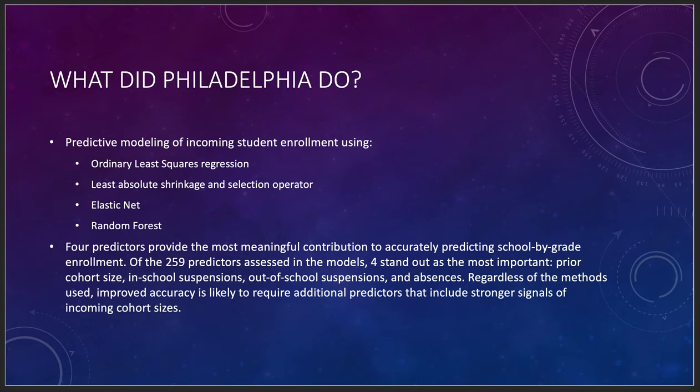Regardless of the methods used, improved accuracy is likely to require additional predictors with stronger signals of incoming cohort sizes. But these four were the most important. Based on my career in academia, I can point to class size, how many times students have been suspended in or out of school, and how often they attend — those predictors make sense and I believe this model.